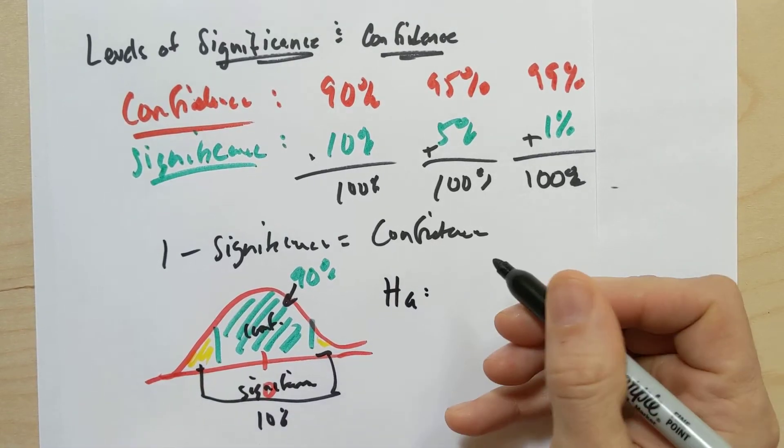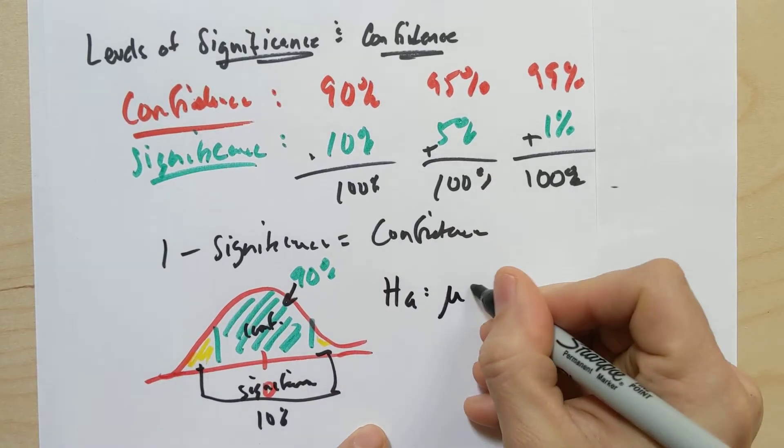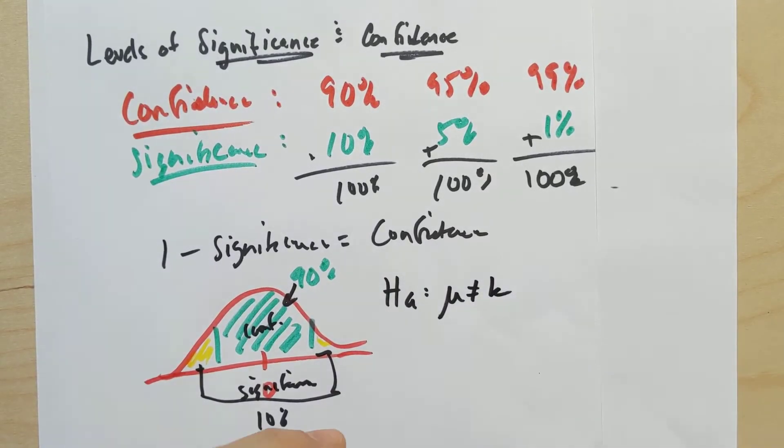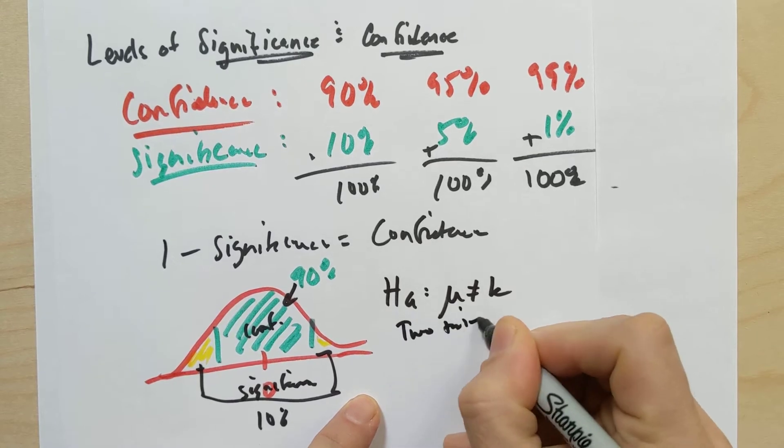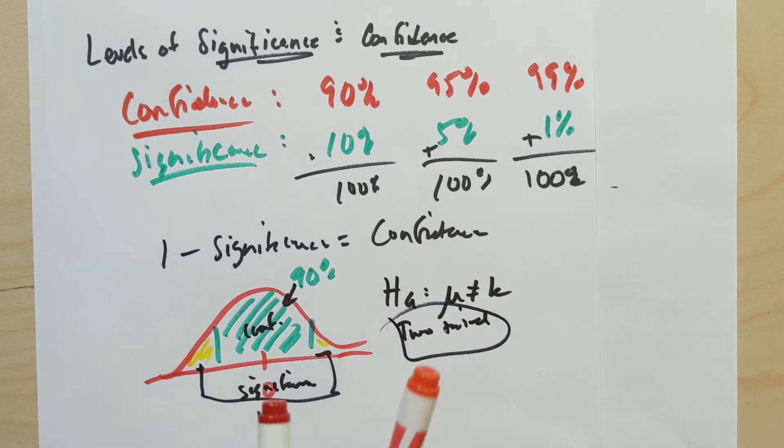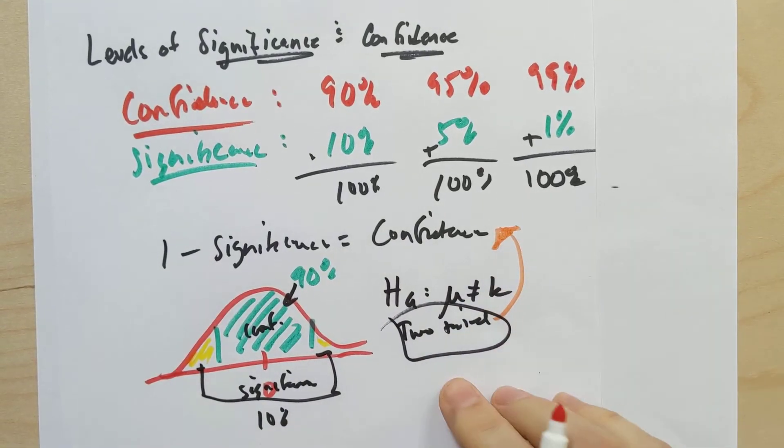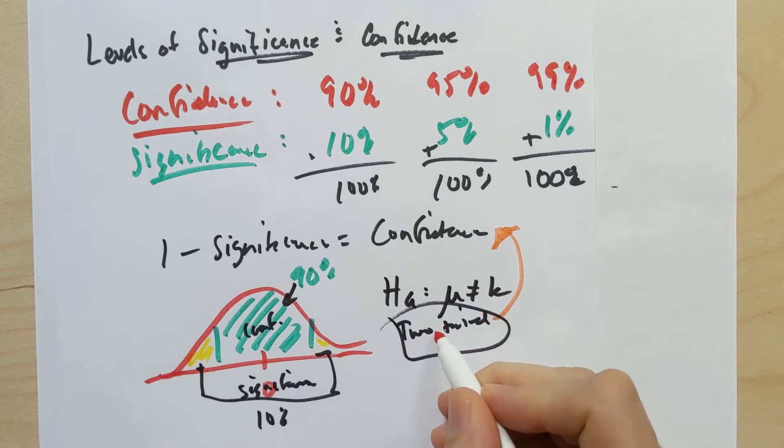And when does the level of significance care about two tails? Well, when we had an alternative hypothesis, HA, which was something like, I don't know, that the mu is not equal to some number K. Whenever we had a two tail test. And so what the, this fact that one minus the level of significance is associated with the level of confidence only applies when we have a two tail test, right?